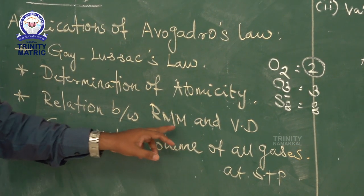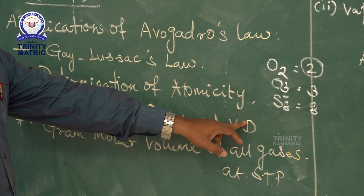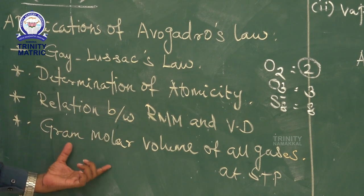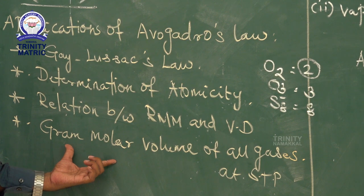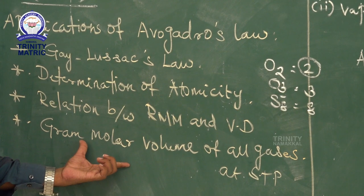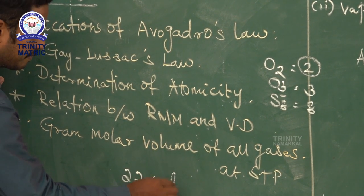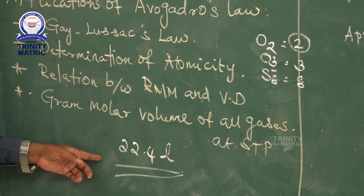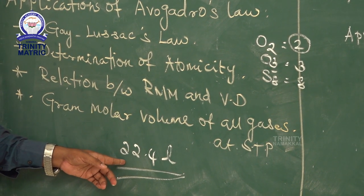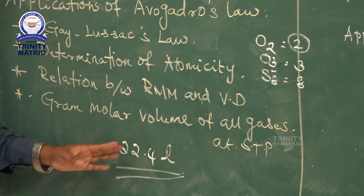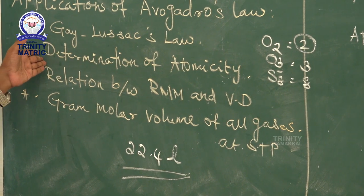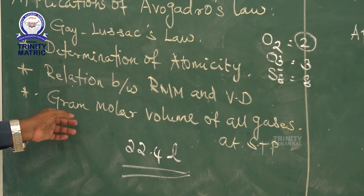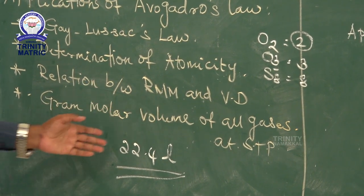The third application is the relationship between relative molecular mass (RMM) and vapor density (VD). The fourth application is that this law is mainly used to find the gram molar volume of all gases at STP, which is 22.4 liters. One mole of any gaseous substance has a gram molar volume of 22.4 liters.